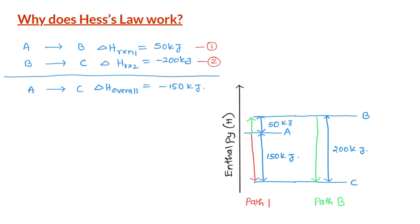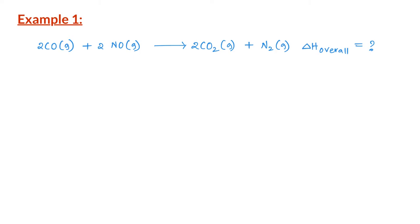So the reason Hess's law works is that enthalpy is a state function. Let us now apply Hess's law for some chemical equations. Let us say we need to determine the enthalpy change of the following reaction, which is very difficult to conduct in the lab inside a calorimeter. We can take other reactions with known values of delta H and add those reactions to obtain the desired reaction.